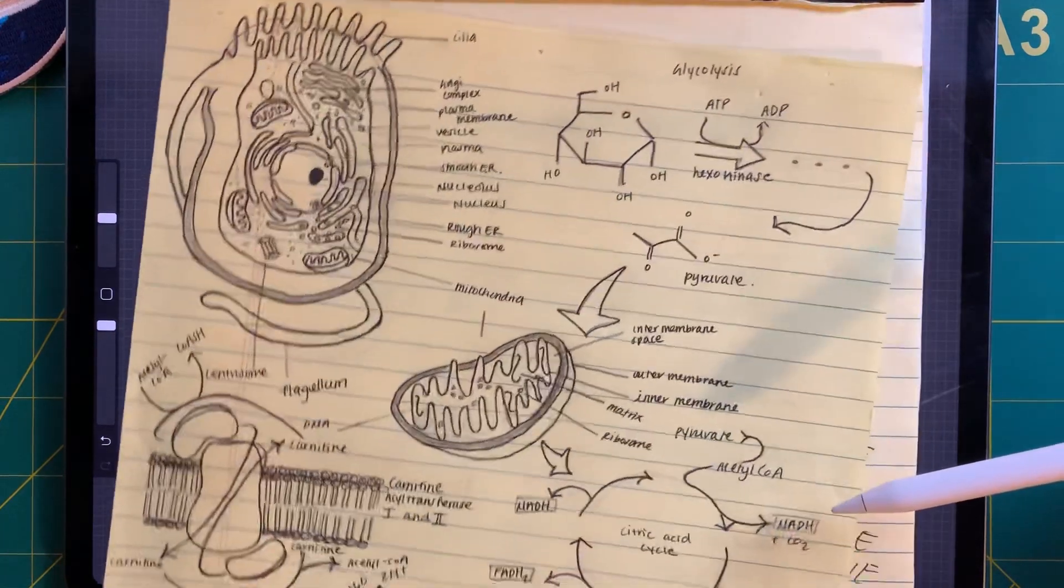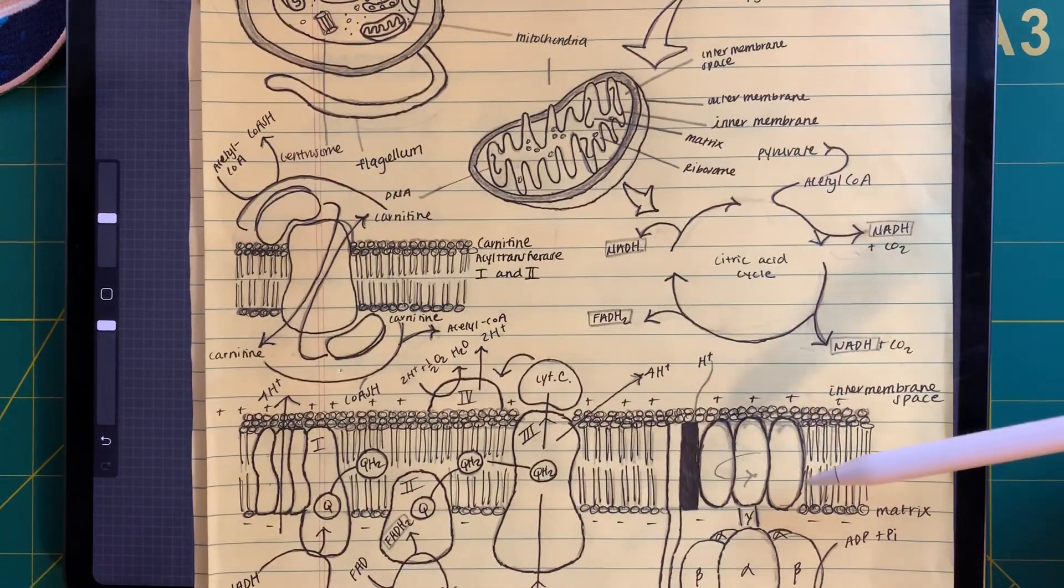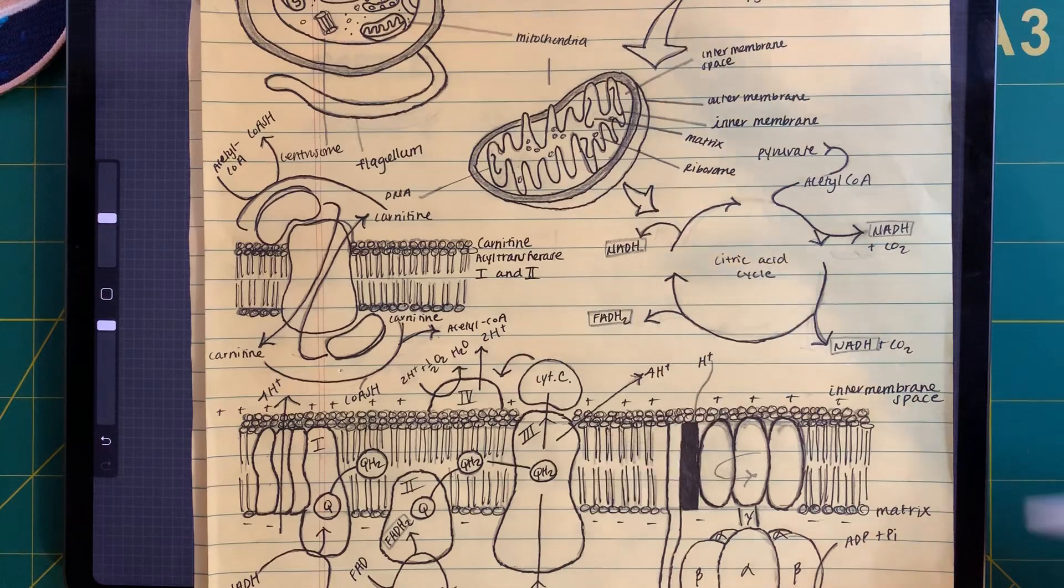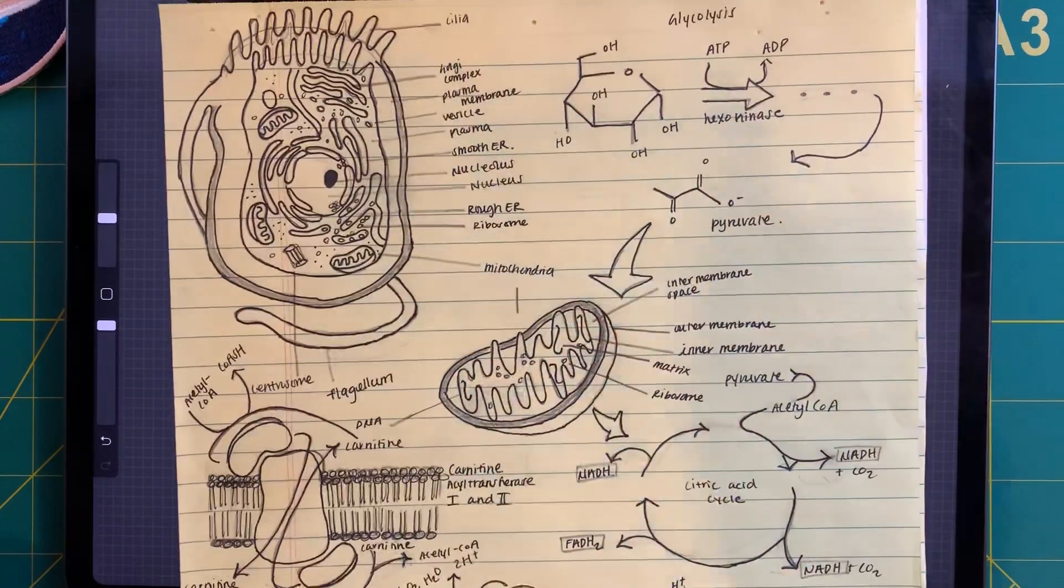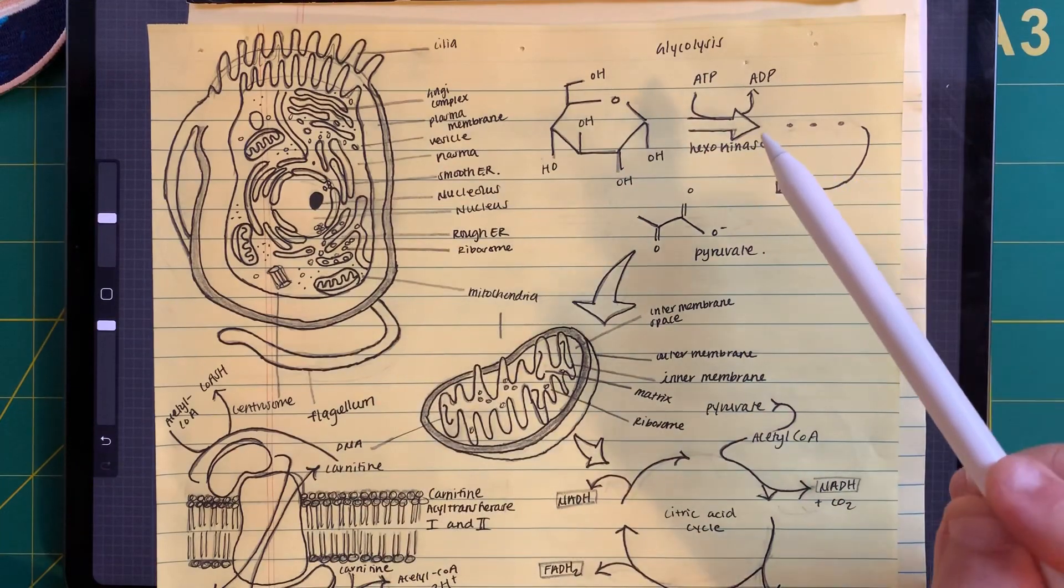We're going to go through the Krebs cycle. Now this Krebs cycle is going to feed the electron transport chain. The electron transport chain is what's going to drive most of our energy synthesis or ATP synthesis. So we should start talking about how glucose enters the animal cell and the first few steps of glycolysis.